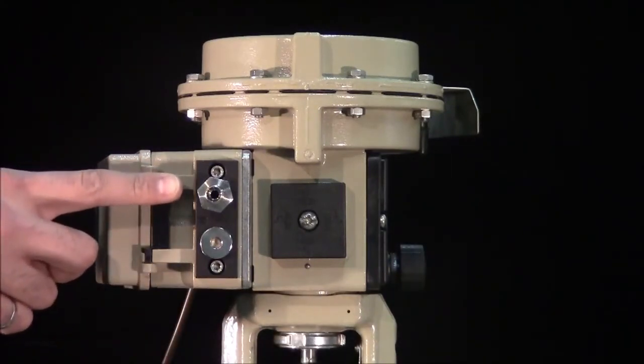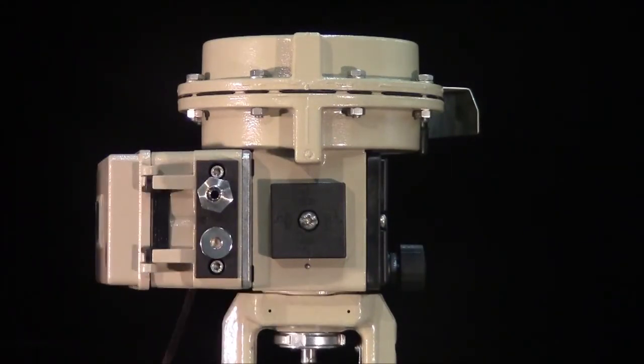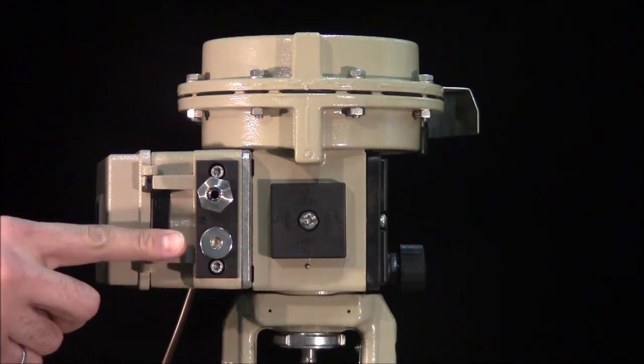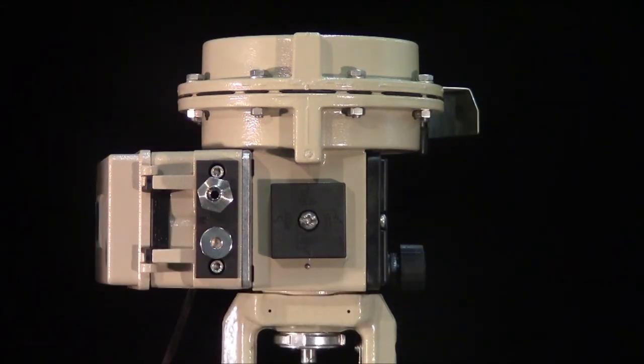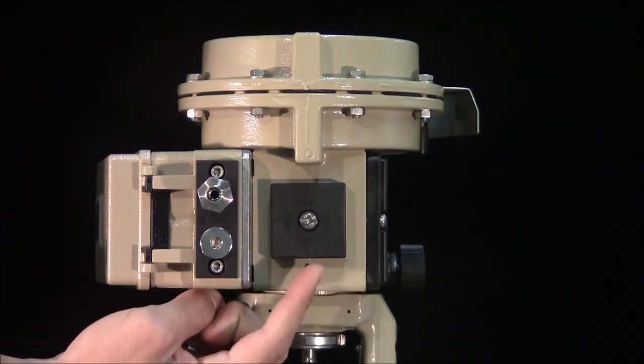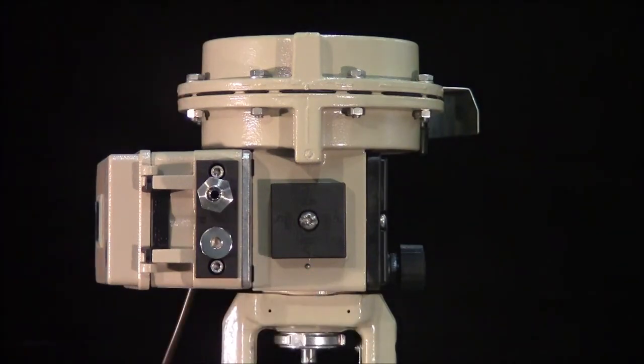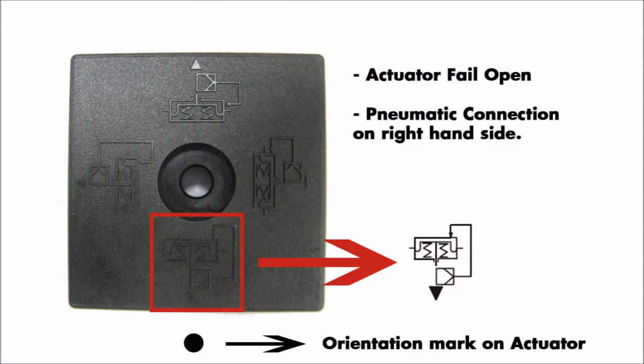Complete the pneumatic connections by attaching the supply air to the top port and blocking the external output port. As our actuator fails open upon loss of air supply, we'll adjust our switchover plate to correspond with the operation of the valve.